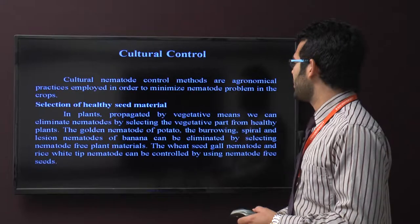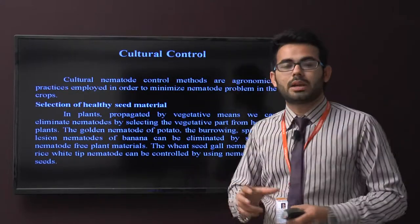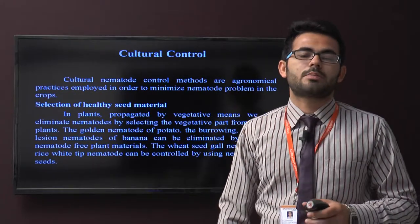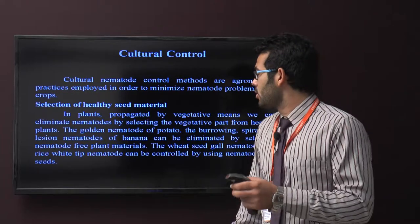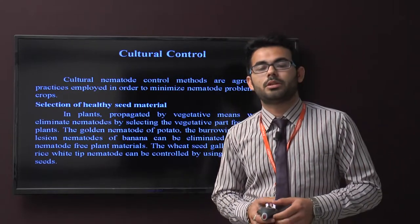In plants propagated by vegetative means, we can eliminate nematodes by selecting the vegetative parts of healthy plants. The golden nematode of potato, the burrowing, spiral, and lesion nematodes of banana can be eliminated by selecting nematode-free plant material.